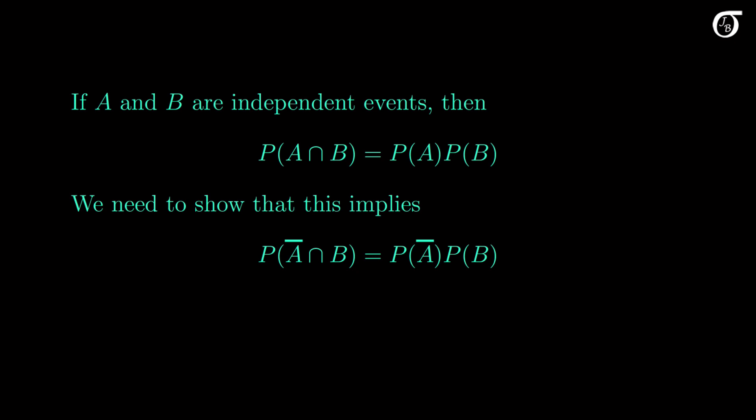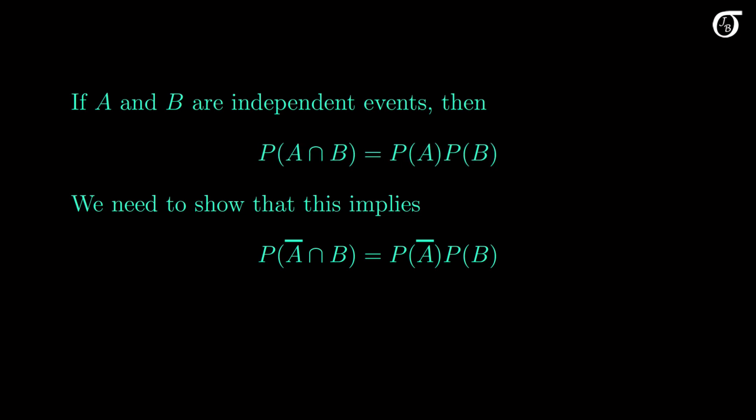We need to show that if A and B are independent, then so are A complement and B. By our definition of independence, we need to show that if the probability of the intersection of A and B equals the product of the probabilities of A and B, then the probability of the intersection of A complement and B equals the product of the individual probabilities.